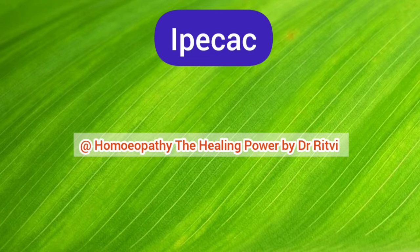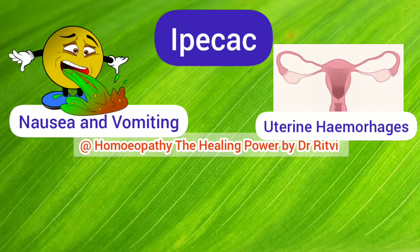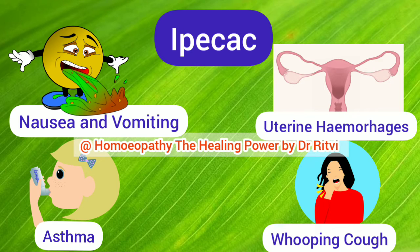Ipecac is one of the most beautiful medicines useful for nausea and vomiting. But it will be our biggest misconception if we consider Ipecac only for nausea and vomiting. In fact, Ipecac is a useful medicine for all uterine haemorrhages, for respiratory diseases like asthma and pneumonia, and also for whooping cough in children. In this video we will discuss in detail all of these clinical conditions where Ipecac can be prescribed.